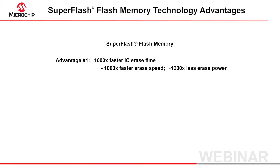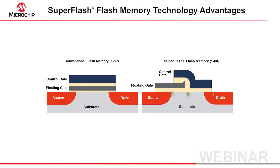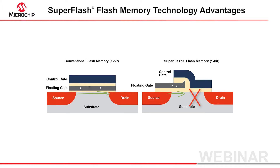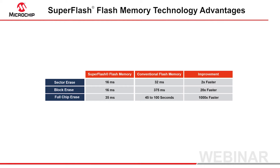Super Flash advantage number one is erase time. Because Super Flash uses a split gate, the control gate has the ability to block any current flow to the drain independently of the charge on the floating gate. Residual positive charge on the floating gate created by over-erase can't cause a leakage path problem because a leakage channel doesn't extend all the way to the drain. However, over-erase in conventional flash architectures can't be allowed to happen because of the leakage paths created, so erase algorithms on conventional flash require a series of short burst erase-then-check pulses. The result is IC erase times that are several minutes. Super Flash can be erased in milliseconds, even for the full IC, as this chart shows.